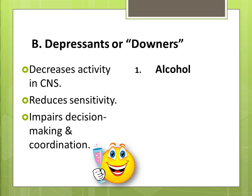The number one depressant is alcohol, as it indirectly stimulates the release of GABA. A myth of alcohol is that it makes you happy. What it does is lower your inhibition so you perceive yourself as happy. These lowered inhibitions often result in decreased motor skills, reaction time, and slurred speech.